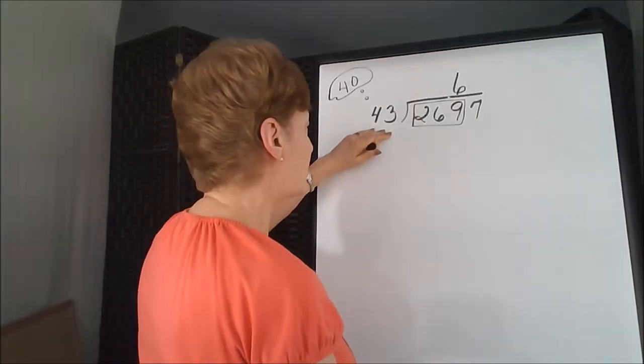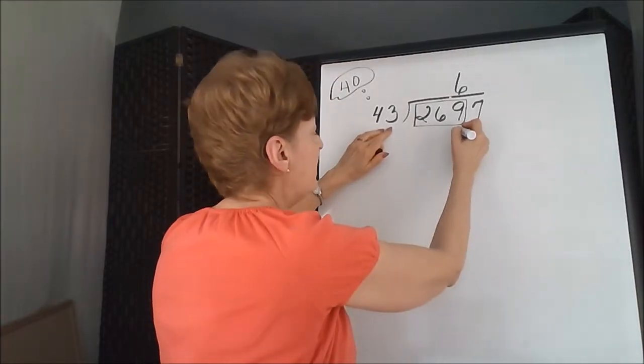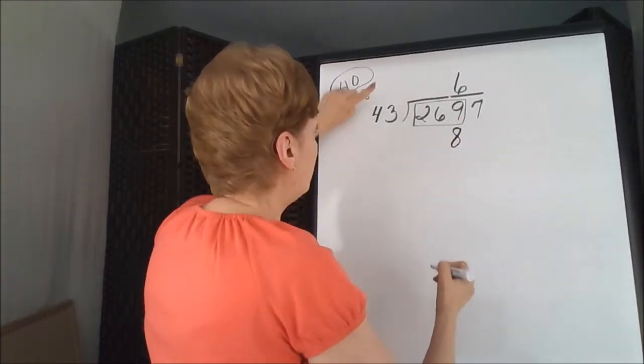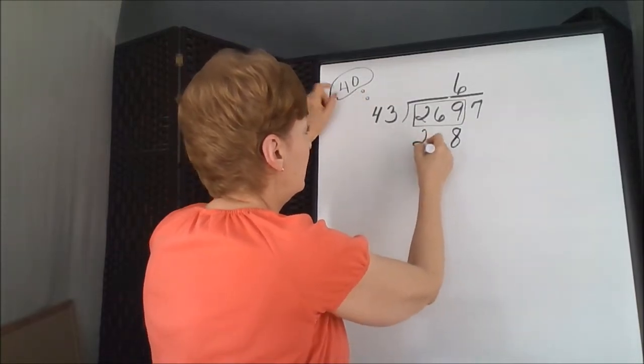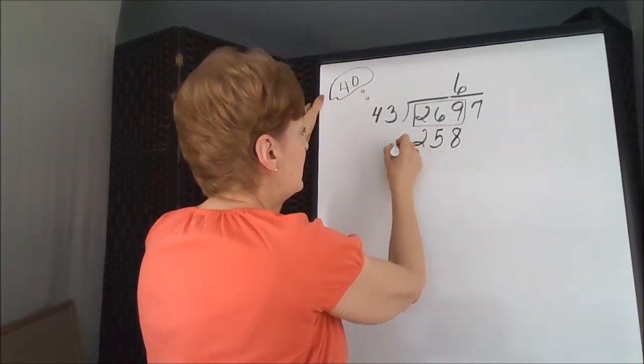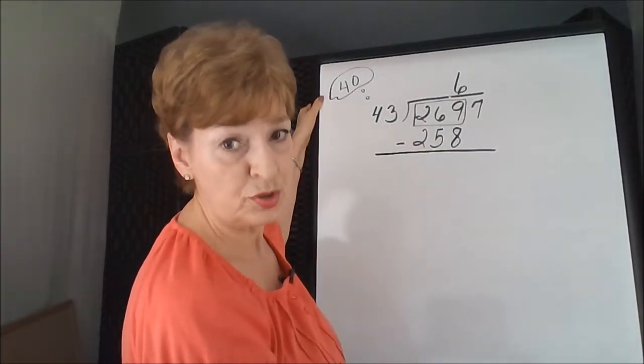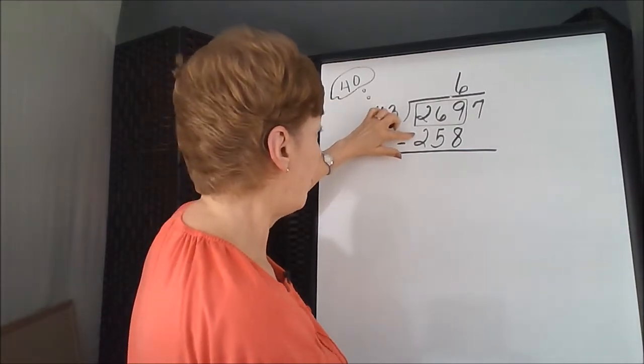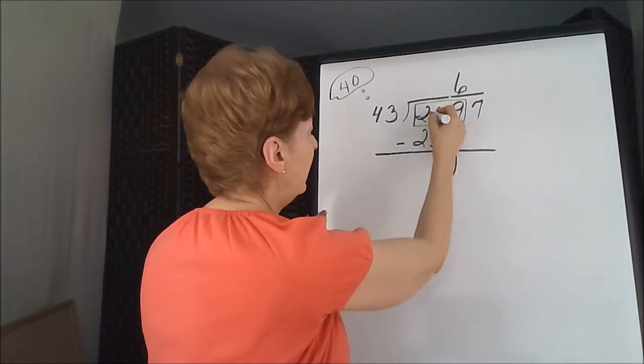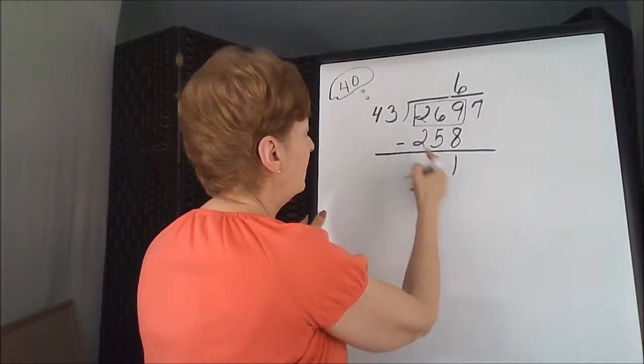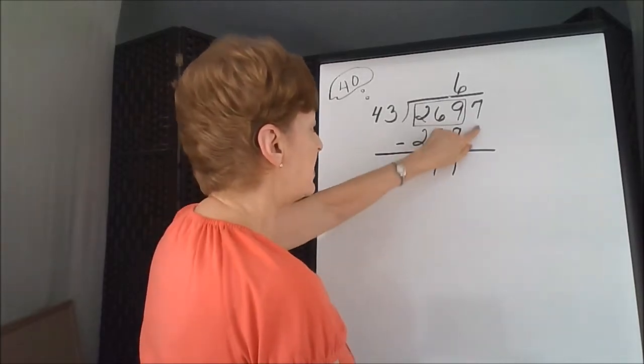Now I'm going to use the actual divisor to do the calculation. 6 times 3 is 18, carry 1, 6 times 4 is 24, and 1 is 25. Since this is a partial answer, and division is a quick way to subtract, we're going to subtract off the 258. And we would get 1, and 6 take away 5 is 1. This would be 0. The next number we need to bring down is the 7.